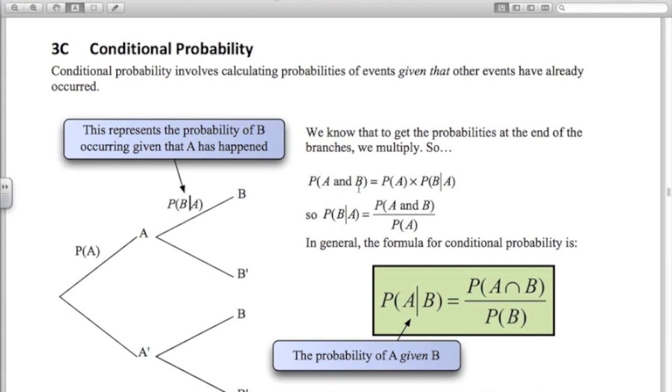We represent this by drawing this line down the middle. So this is the probability of B happening given that A has happened. So in a probability tree this probability here is the probability that B is going to happen given that A has already happened.